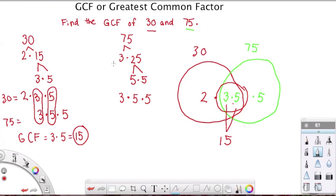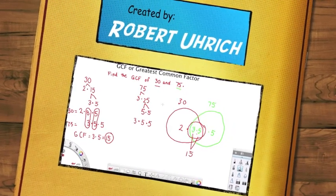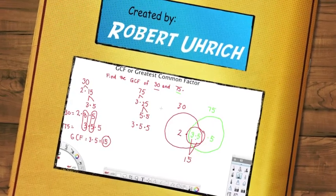But what you need to do is you need to find the prime factorization of each number, and that's when you list all the prime factors to get the product of your number. And then you look for common factors, and you take those common factors, and you identify them somehow. And then when you multiply the factors together, that will give you the greatest common factor, or the greatest factor that both numbers share.